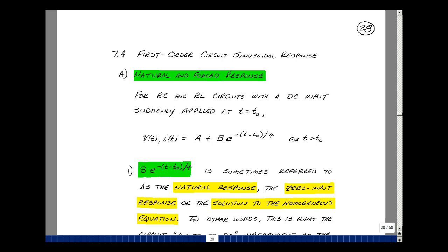For resistor-capacitor and resistor-inductor circuits with a DC input and a switch, we found that the form of the solution was some A plus B times E to the minus T minus T0 over tau, for really any voltage or current in our circuit after the switch has changed state.